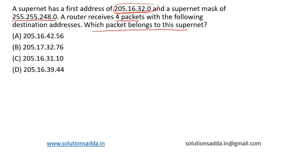Let's check option D, that is 205.16.39.44, and we are ANDing it with the supernet mask. Let's perform the AND operation.